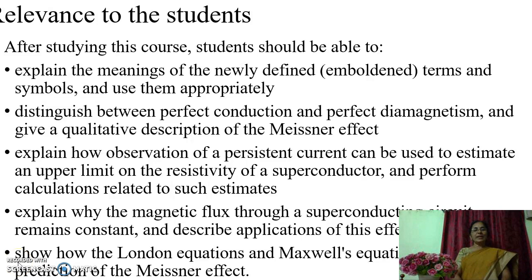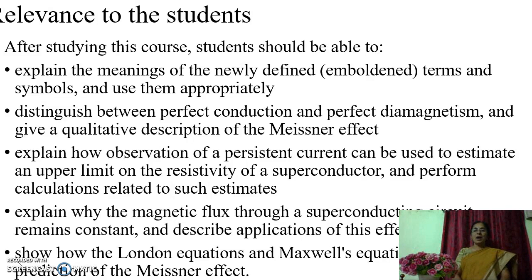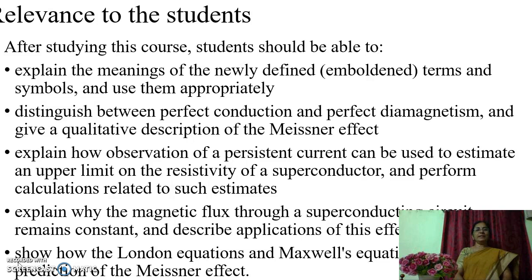They will be able to explain why the magnetic flux through a superconducting circuit remains constant and describe applications of this effect. They will also be able to show how the London equations and Maxwell's equations lead to the prediction of the Meissner effect.